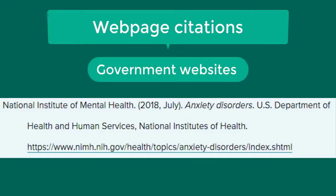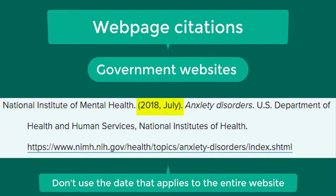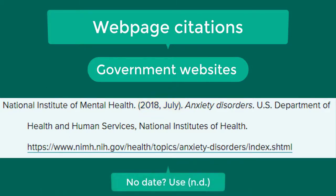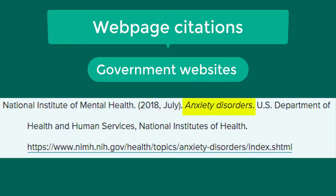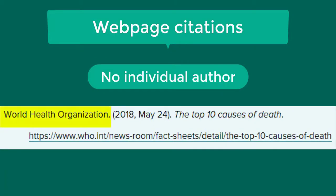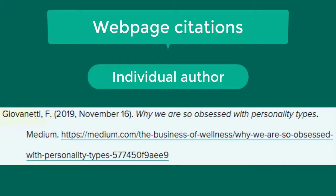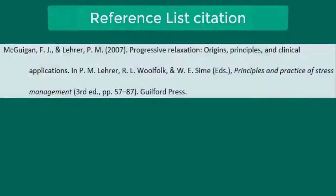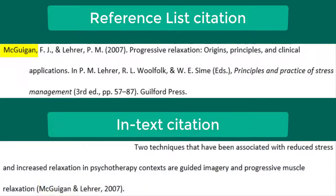Web pages you might cite include government websites. If there is no individual author, use the agency responsible for the webpage as the author. Provide a date for the webpage if possible — look for a date pertaining to the specific content you're citing. If there is no date, use the abbreviation N.d. Italicize the title of the webpage and end the reference with the URL. Follow a similar format when citing a non-government website where the organization is the author. If citing a webpage with an individual author, list that person as the author, then include the date, the italicized title of the webpage, the website name, and the hyperlinked URL. The name or phrase at the beginning of each reference list citation must correspond to what is listed in your in-text citations.